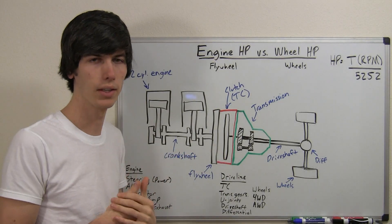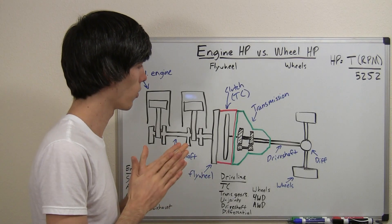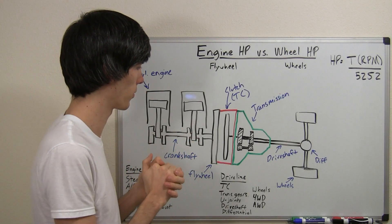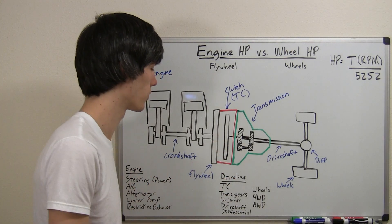That's why with some vehicles, you may see that the automatic is rated at a lower horsepower than the manual, and they're taking into account the torque converter.